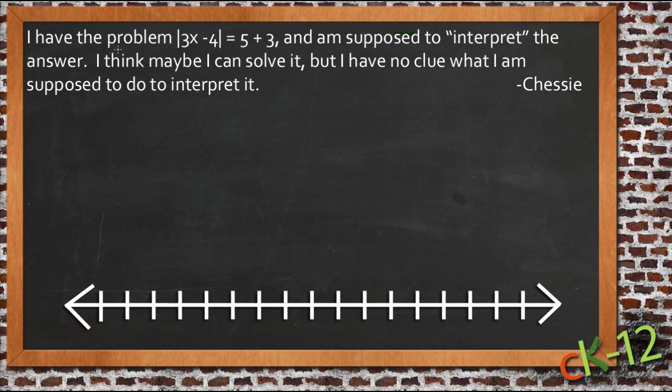Her question says that she has the problem absolute value of 3x minus 4 equals 5 plus 3, and she's supposed to interpret the answer. She thinks that maybe she can solve it, but she doesn't have any idea what she's supposed to do to interpret it. So first of all, let's take the information and solve it for ourselves and see what we come up with, and then see what we think we have for interpretation of the answer.